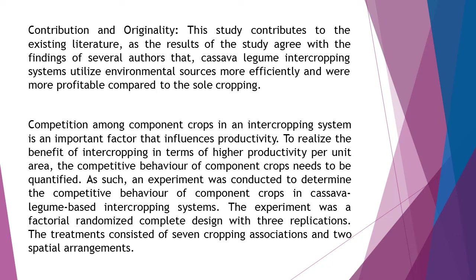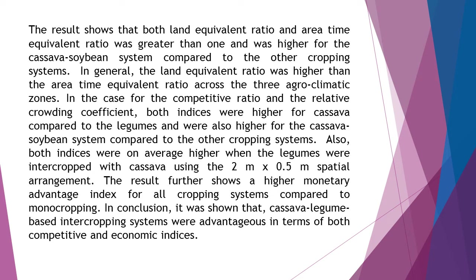The experiment was a factorial randomized complete design with three replications. The treatments consisted of seven cropping associations and two spatial arrangements. The results show that both land-equivalent ratio and area-time equivalent ratio were greater than one and were higher for the cassava-soybean system compared to the other cropping systems.